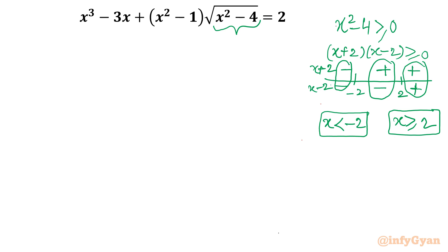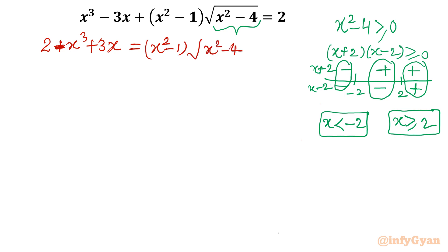I will move x³ - 3x to the right side. So I will write 2 - x³ + 3x = (x² - 1)√(x² - 4). What I did: I took away x³ - 3x from both sides, so it becomes -x³ + 3x on the left. Now on the right-hand side we have a radical square root term, so I will consider squaring both sides.